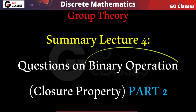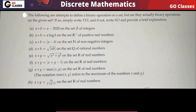Let's solve some more questions on binary operation, or I can say closure property. The following are attempts to define a binary operation on a set, but are they actually binary operations on the given set? The first question: can I say that a star b equals a minus 2020 is a binary operation on the set of integers?